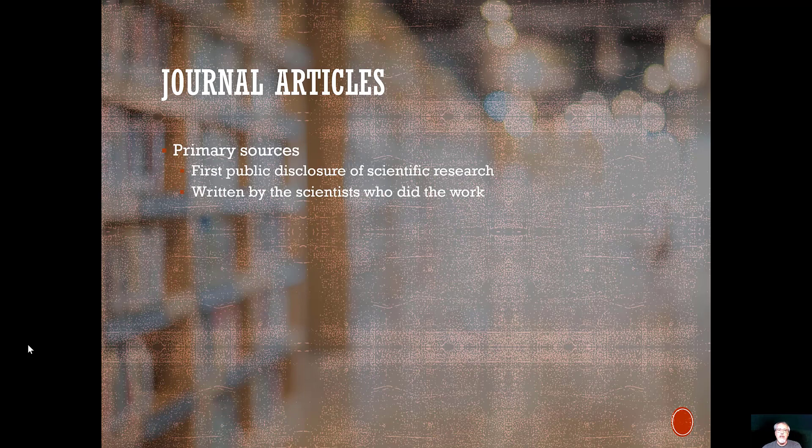And so one thing to understand about journal articles is they are primary sources. This means that they come straight from the horse's mouth. They are the first public disclosure of scientific research as a rule. There are exceptions to that. And they're almost always written by the scientists who did the work. It isn't somebody telling us what some other research group did. It's the research group themselves telling us what they did and what they discovered.